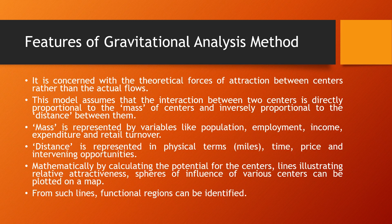This is the gravitational analysis method. Mathematically, by calculating the potential for the centers and illustrating related attractiveness lines, the sphere of influence of various centers can be plotted on a map. From such lines, functional regions can be identified by mapping the sphere of influence of each center.